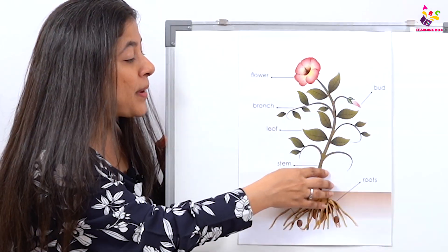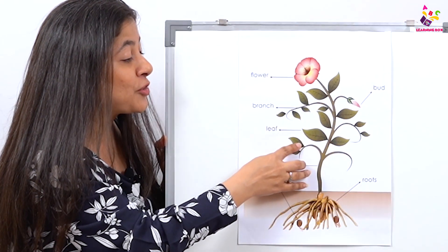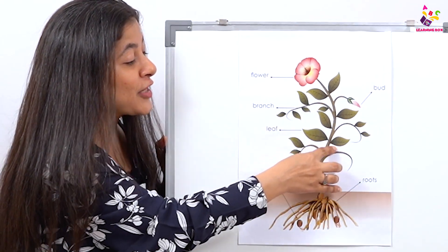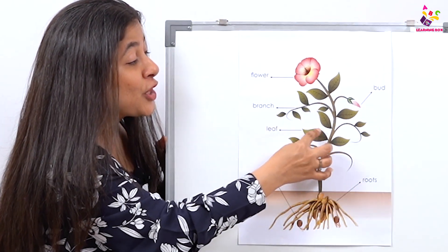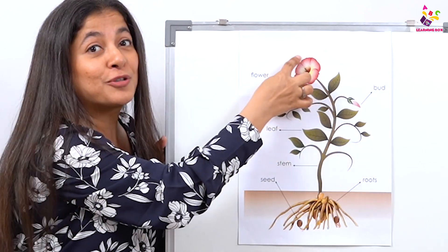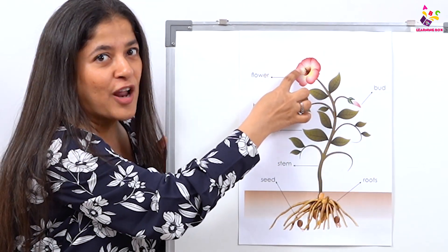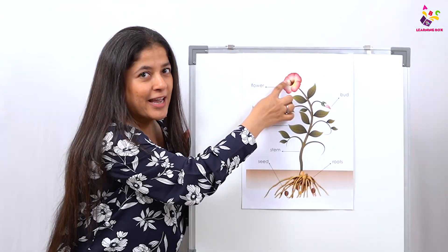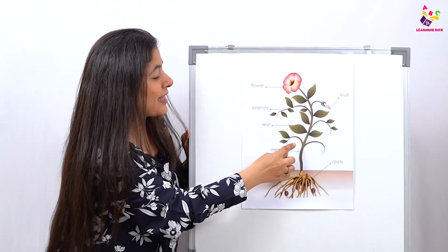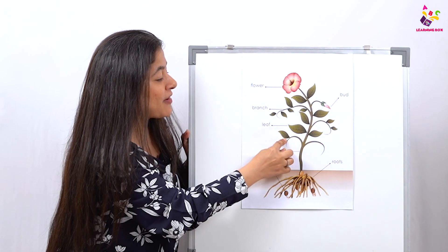This is the stem. The stem takes the minerals and the water from the roots and passes that to the branches, to the leaves, and to the flowers.